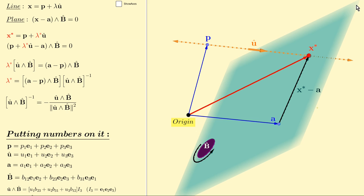We also learned in another video, which I'll link up here, to write the equation of a plane in this form. This is the equation of a plane that passes through the point A and is parallel to the unit bivector b hat.